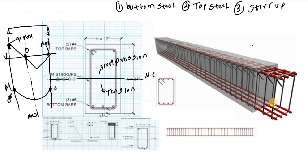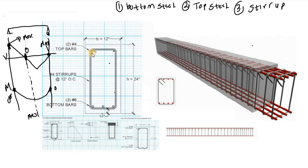Now, looking at this cross-section, we have the reinforcement data. For the top bars, we have two top bars with a diameter of 4 mm. For the bottom bars, we have three bottom bars with 6 mm diameter. For the stirrups, we have 4 mm diameter stirrups provided at 12 inch center-to-center spacing. The spacing from one stirrup to another is 12 inches.